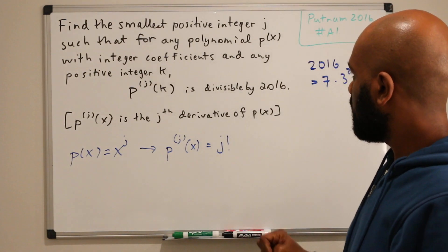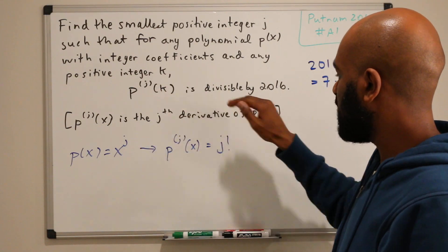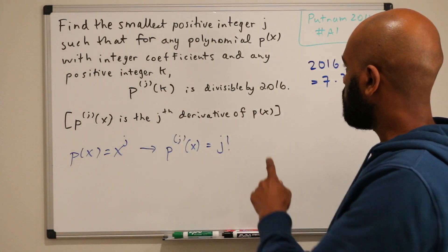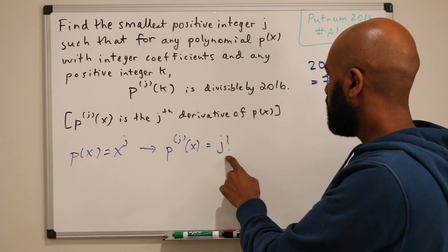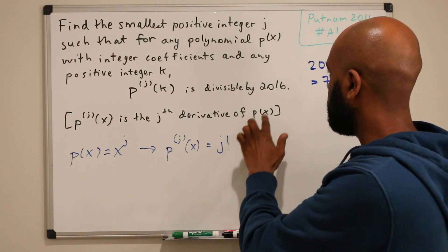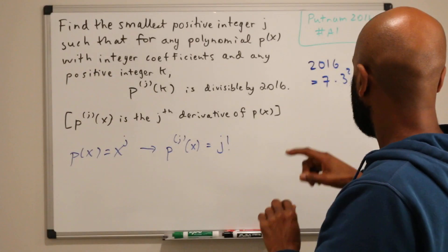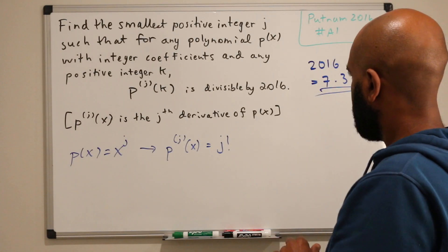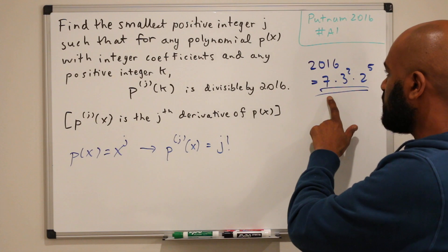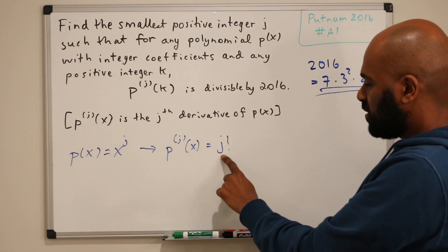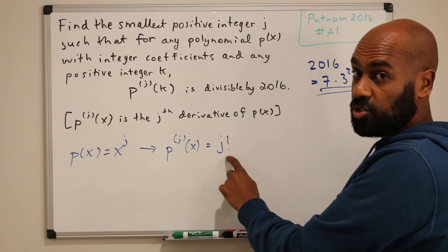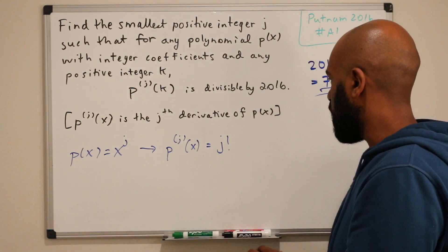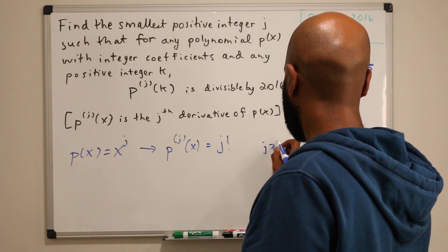And so the question is, this is one function that has to satisfy this condition, so this will give us a restriction on what j has to be. This j factorial needs to be divisible by 2016 and the factors of that are right here. So we first notice immediately that j has to be at least 7 because 7 doesn't appear as a factor of j factorial until j is at least 7 because 7 is prime.